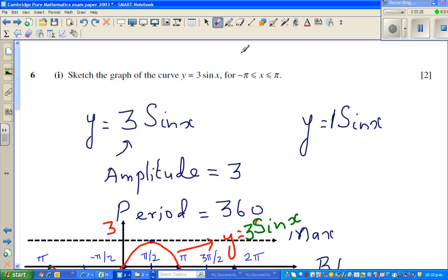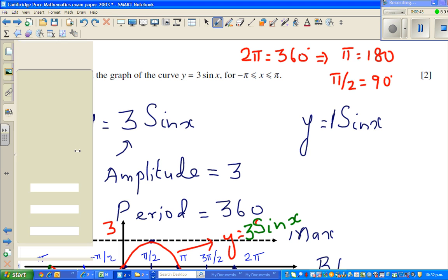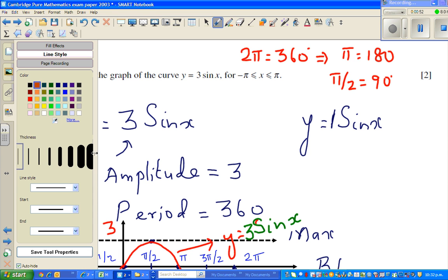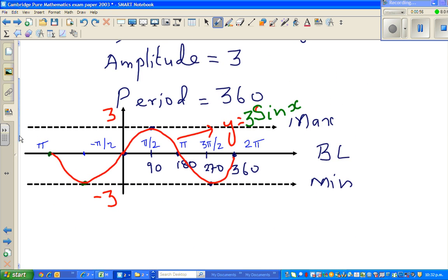You should be knowing that 2 pi is 360 degrees. So from that, you can say pi is 180, and pi by 2 is 90 and so on. So 90 is pi by 2, 180 is pi, 270 is 3 pi by 2, and 360 is 2 pi.